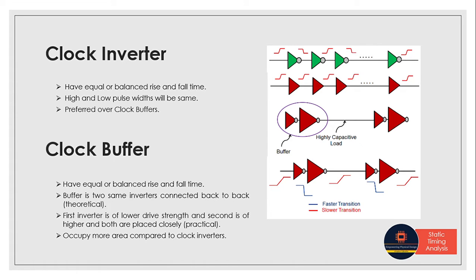If we look at the inverter clock tree, when we give a rising signal (zero to one), we get a falling output, so the pulse width remains the same. Rise and fall time are equal. For buffers, it can be equal too, but there's a difference.